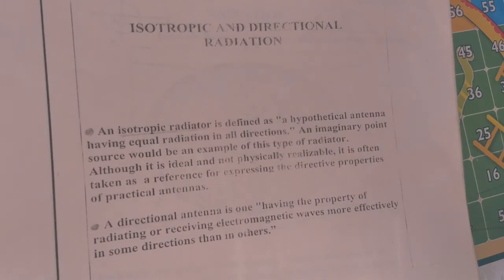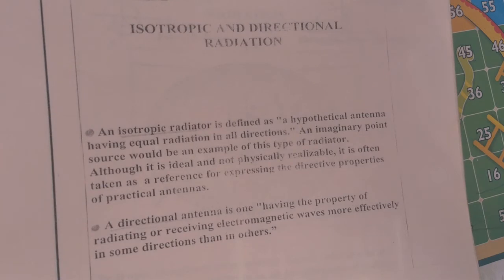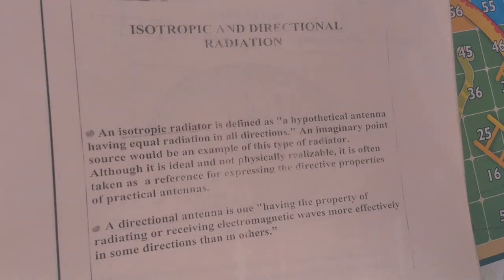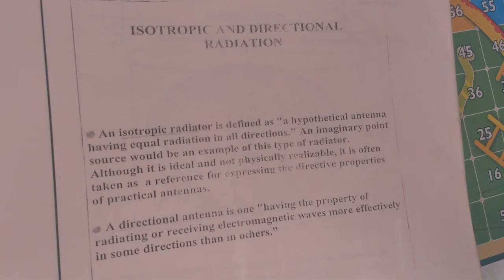An isotropic radiator is defined as a hypothetical antenna having equal radiation in all directions. An imaginary point source would be an example of this type of radiator, although it is ideal and not physically realizable. It is also known as a reference for expressing the directive properties of practical antennas.